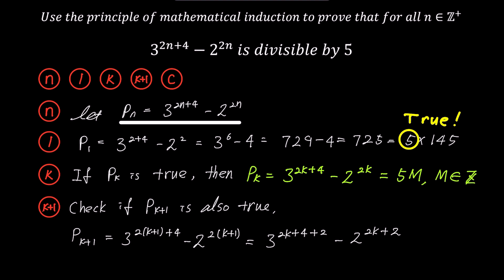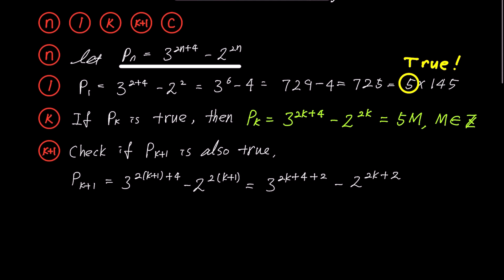Now, can this expression be divisible by 5? It might seem challenging to confirm this fact solely based on this expression. However, we can leverage our only assumption that the kth term pk is divisible by 5. In mathematical induction, you must always make use of the assumption about pk when proving pk plus 1.